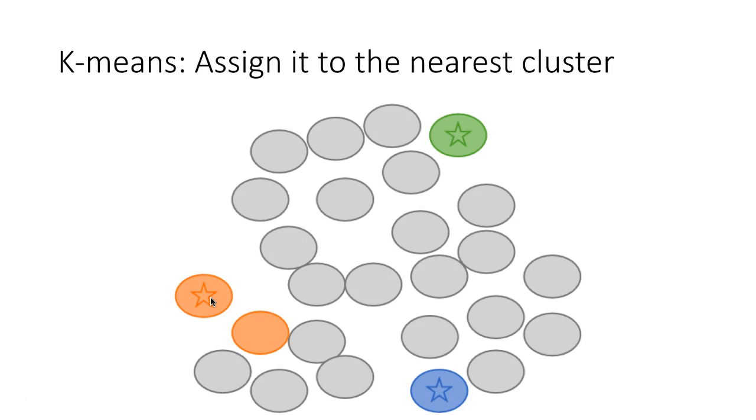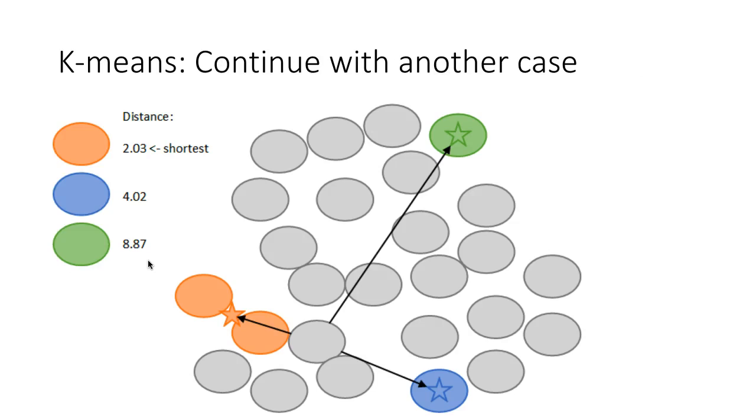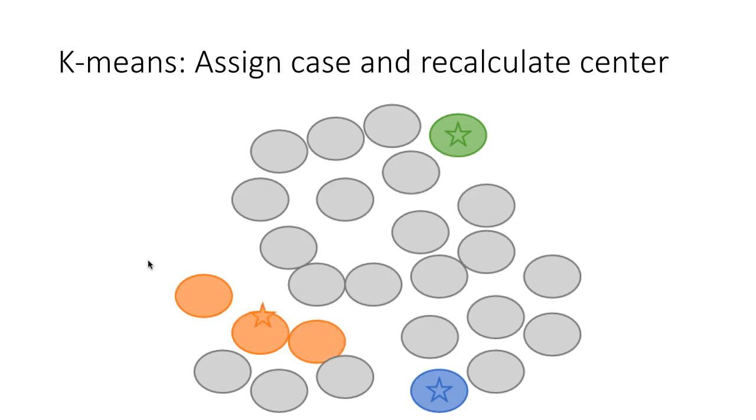Technically, my arrow should point not to the ellipse but to the star because that's where the center of the cluster is, but it's pretty easy to tell regardless here that this case is closest to orange. So, let's assign that case to the orange cluster. All right, now, in our do while loop, we've got to reassign or recalculate the center of our orange cluster. It's no longer right over the middle of that case. It's in between these two cases. So, cluster center has changed. Let's proceed with another case.